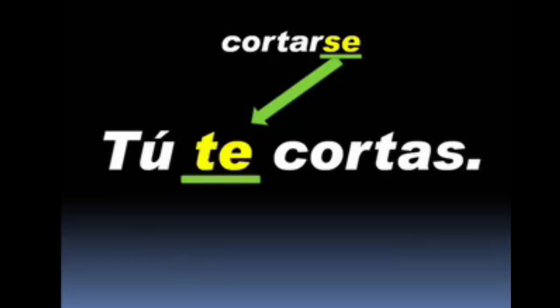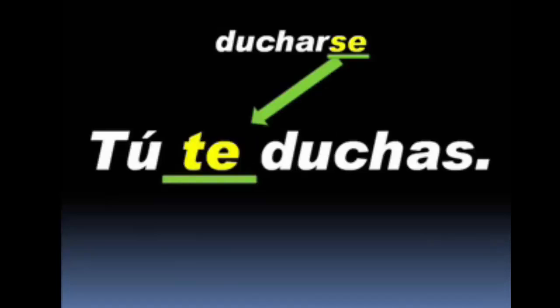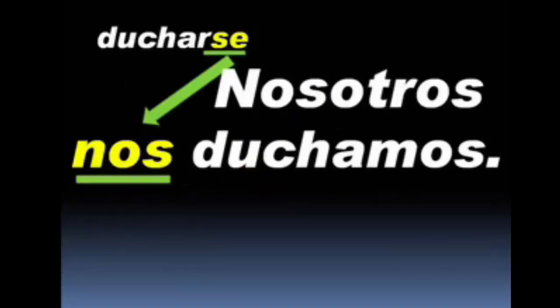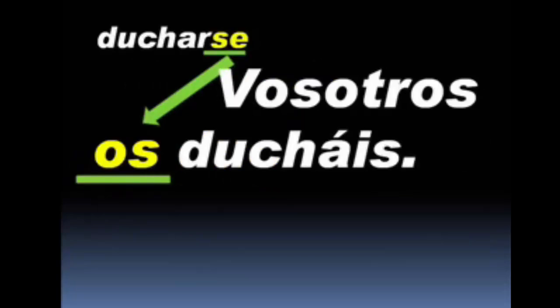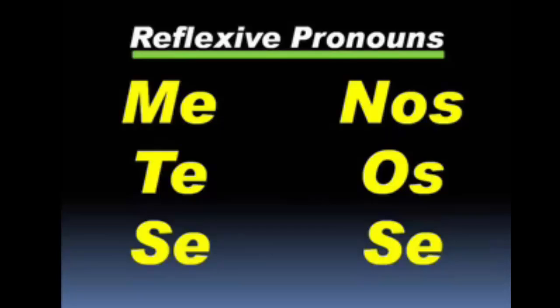Let's look at the verb ducharse, to shower oneself. Yo me ducho — I shower myself. Tú te duchas — 'te' means yourself. Él se ducha — he showers himself. Ella se ducha. Usted se ducha. Nosotros nos duchamos. Vosotros os ducháis. Ellos se duchan. The reflexive pronouns are: me (myself), te (yourself), se (himself, herself, or yourself in the usted form), nos (ourselves), os (y'all's self), and se (themselves or yourselves).